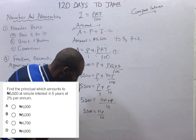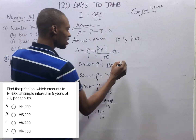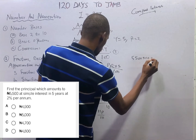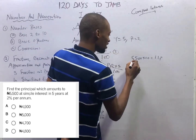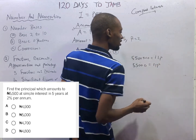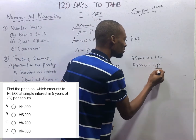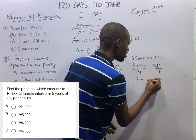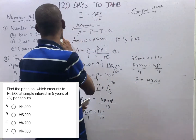When you cross multiply, that is the same as 5,500 over 1, giving 5,500 × 10 = 11P. Multiplying by 10 simply adds a zero, so 55,000 = 11P. To get P, divide both sides by 11. Therefore, principal equals N5,000. That is your principal and the answer to this question.